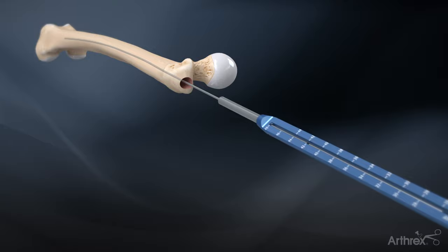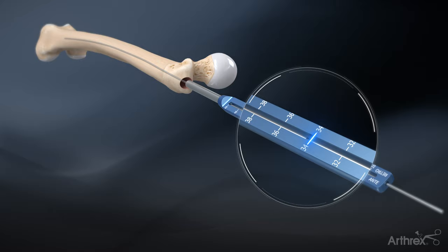Measure the length of the ball nose guide wire with the guide wire depth gauge from the laser etch line to determine the nail length.